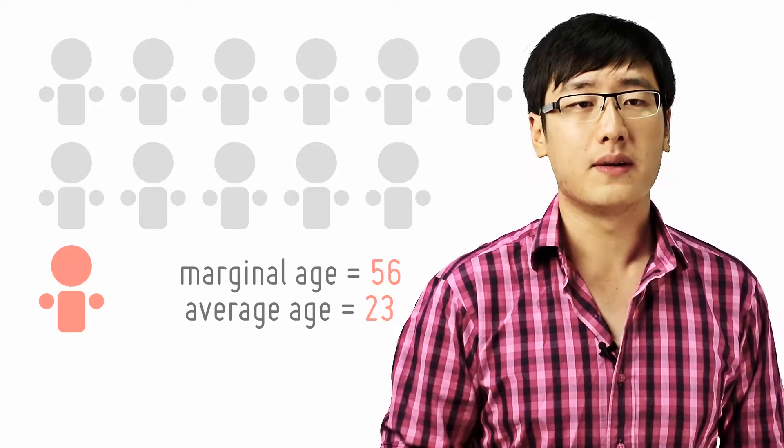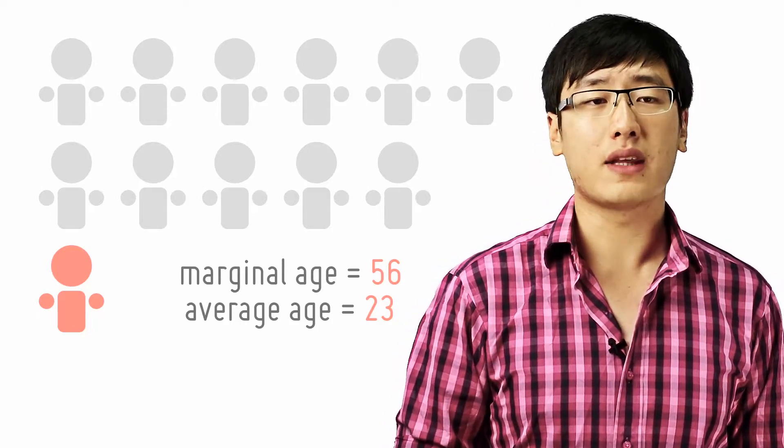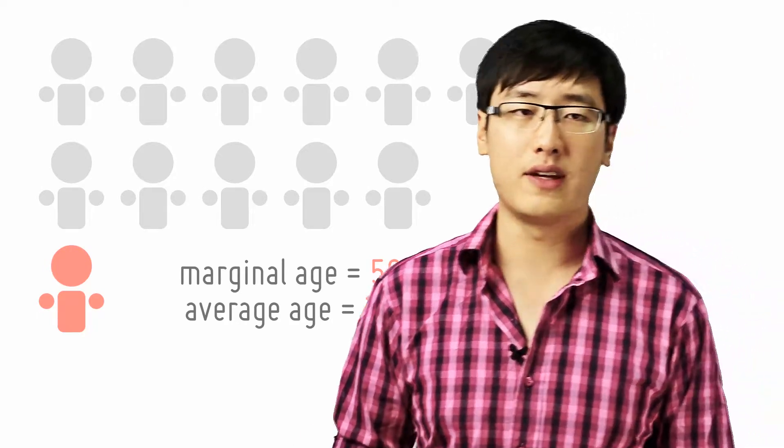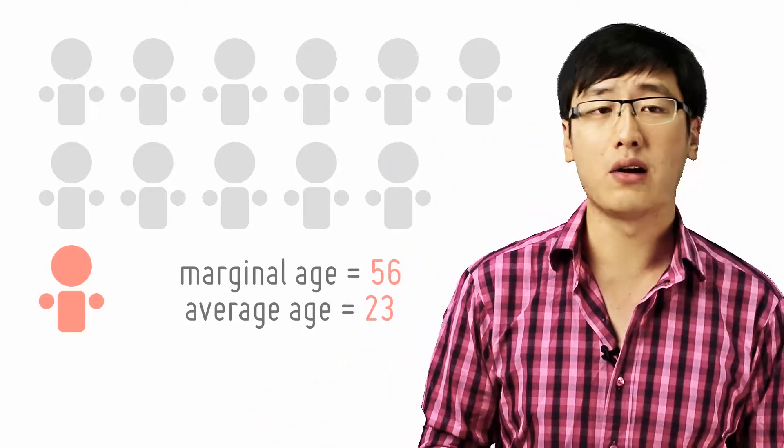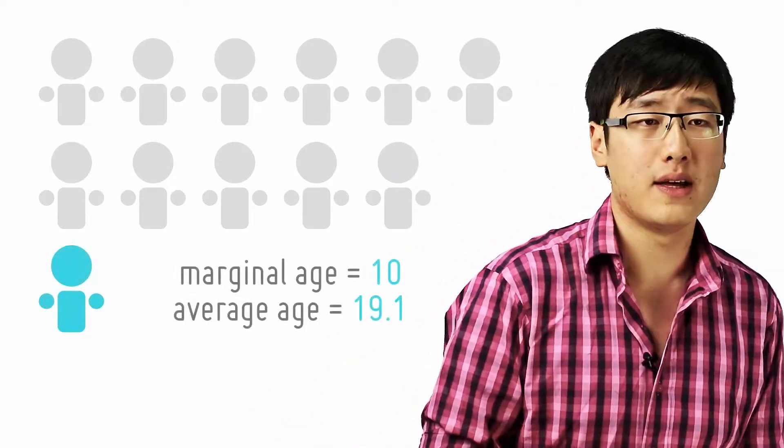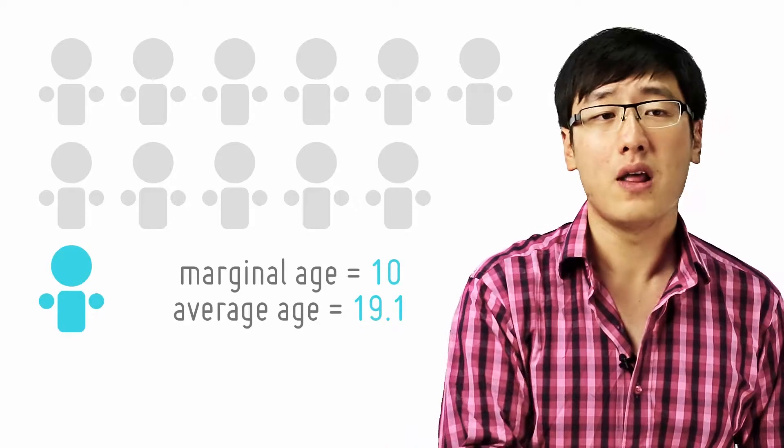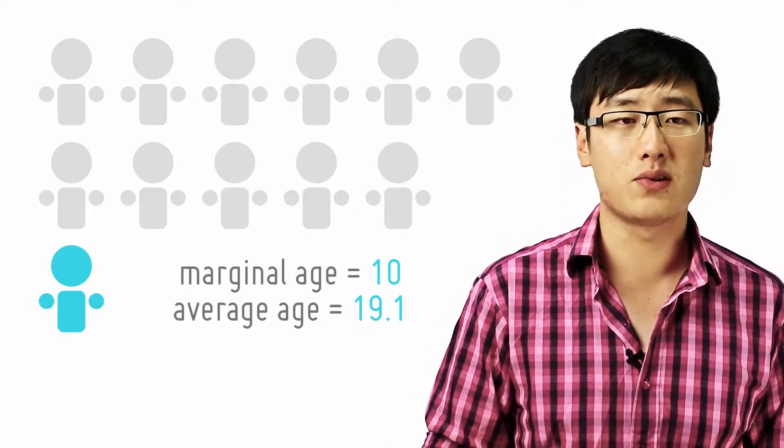Now instead of the 56-year-old, if a child of 10 years old walks into the room, this will actually pull the average down. From these examples, we can deduce the rules.